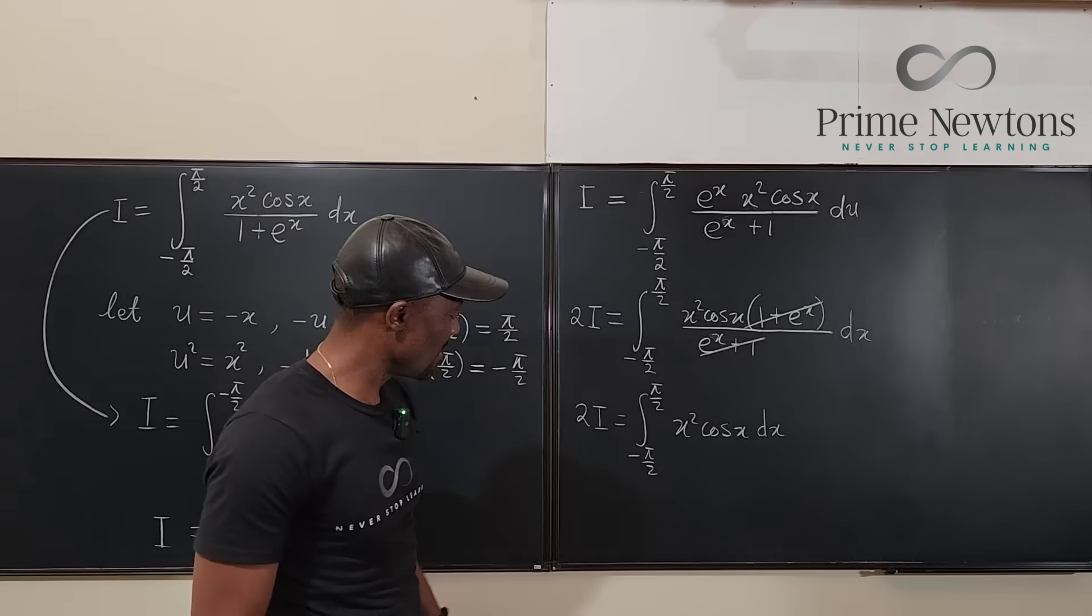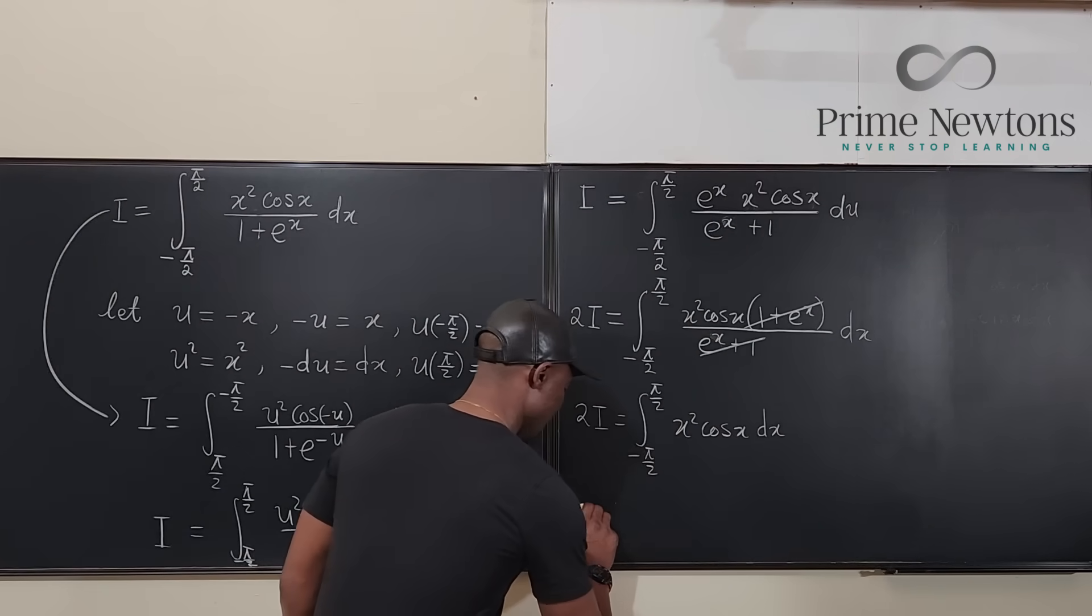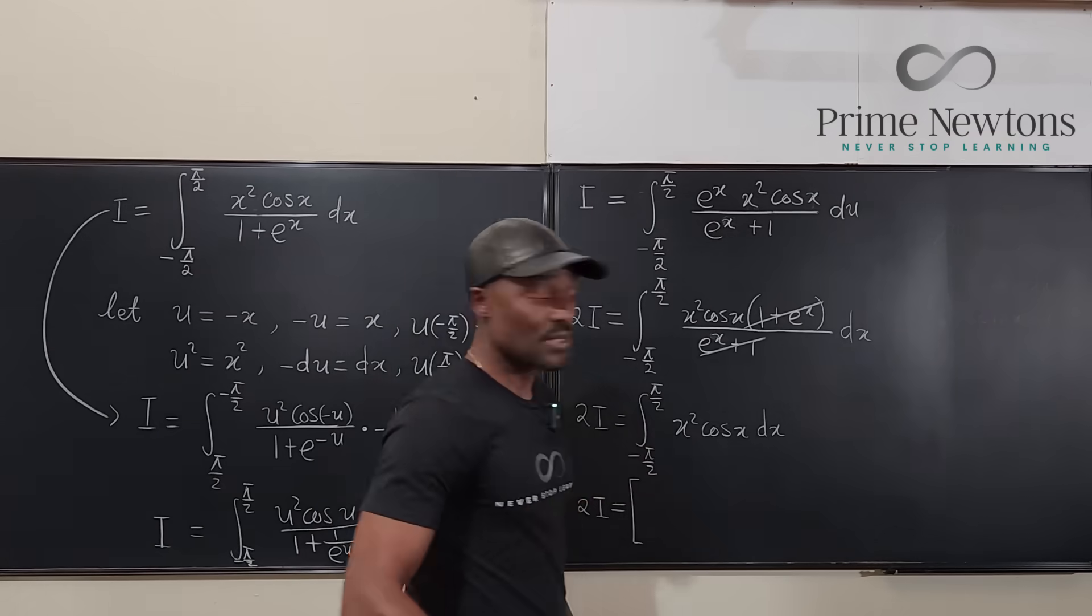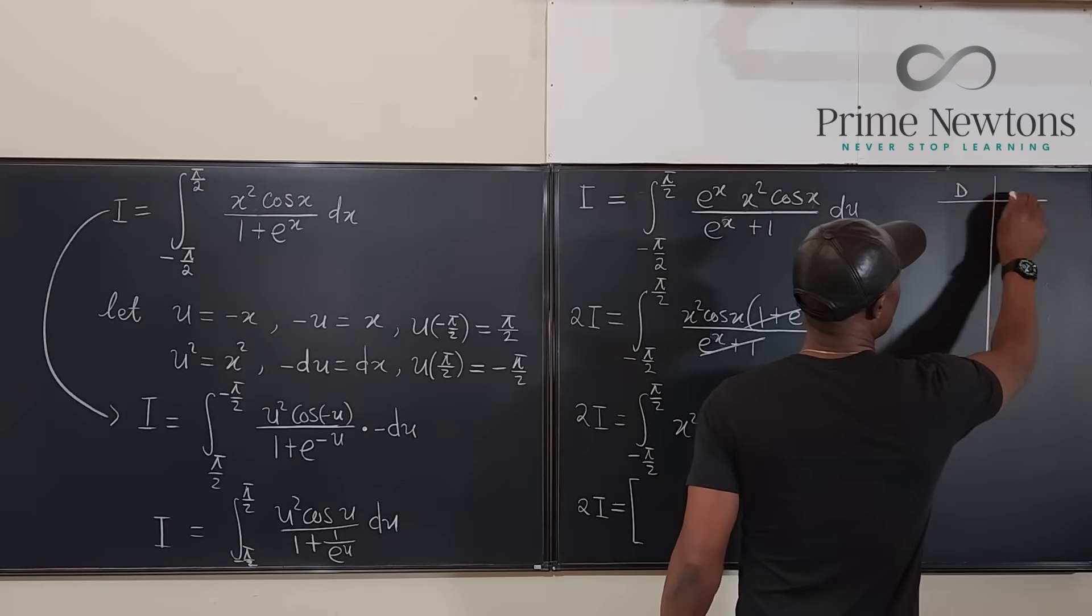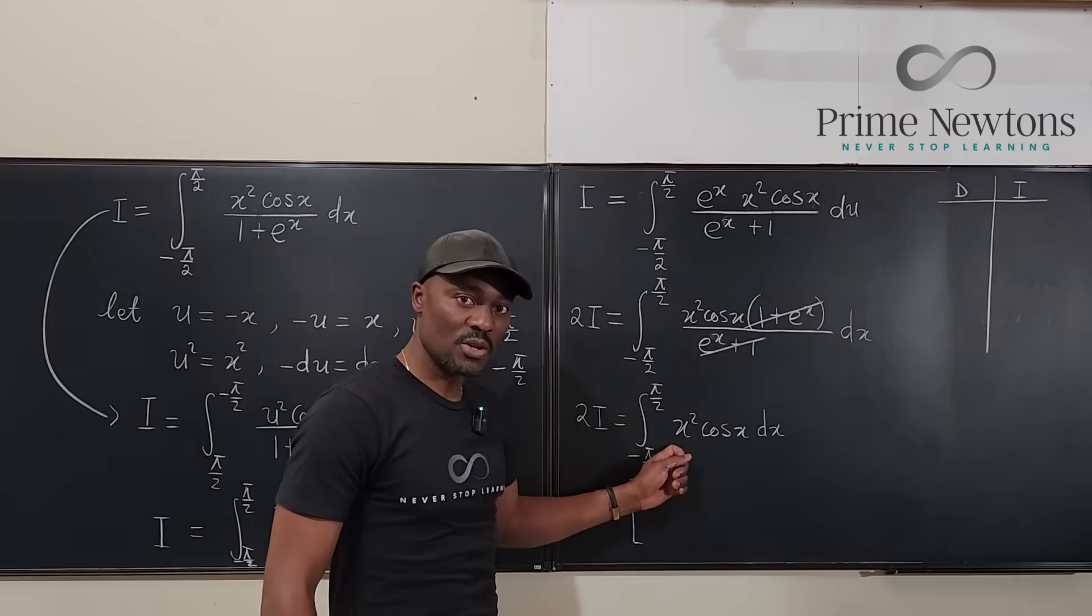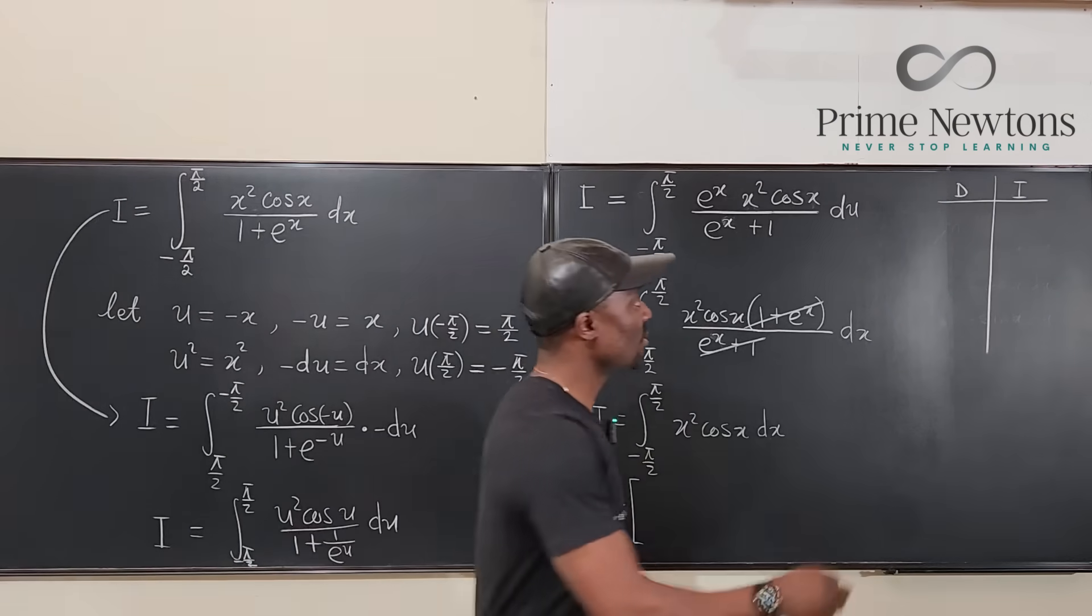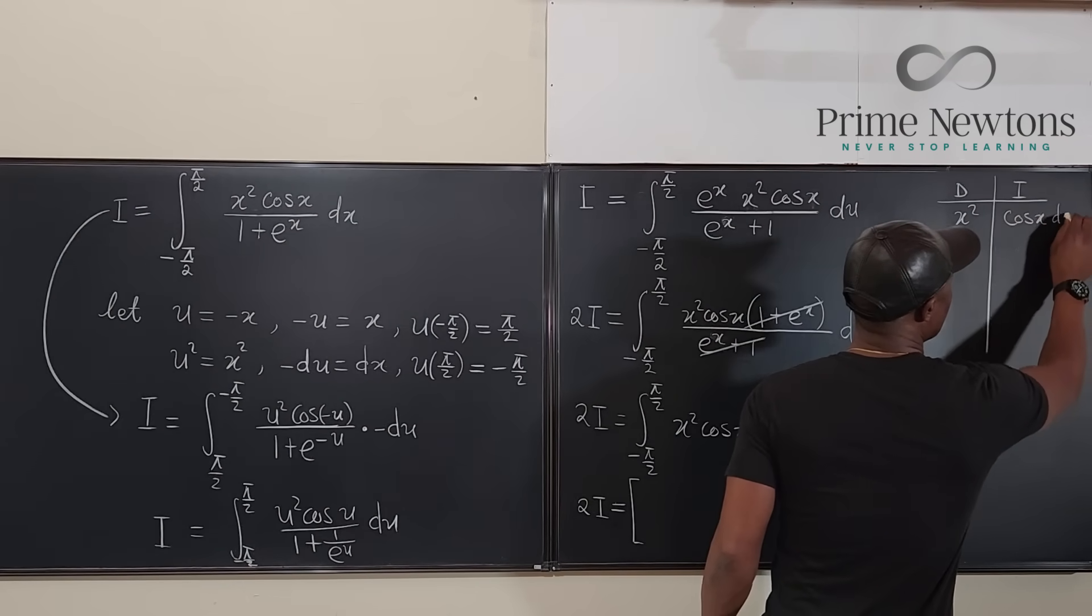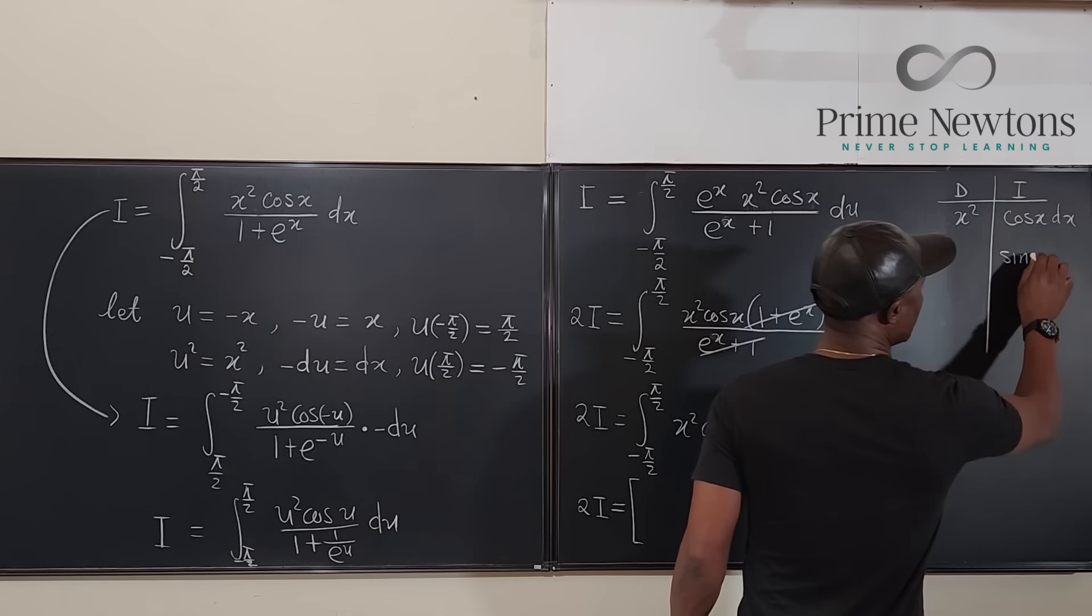So how do we integrate this? Well we can easily integrate our answer here. We have 2I will be equal to, we're going to evaluate the integral. If we integrate this we can use the DI method. I think that works. So we differentiate, we integrate. Because this is the product of a polynomial and a trig function. Differentiate the polynomial. Integrate the trig function. So we have x squared. We have the trig function which is cosine x dx. If we integrate this we're going to get sine x dx. Let me be sure that the camera is catching this. And then if we integrate one more time.